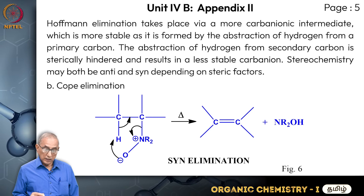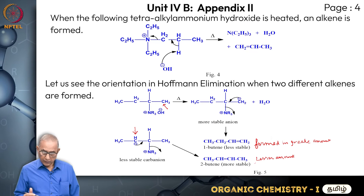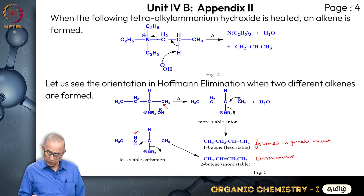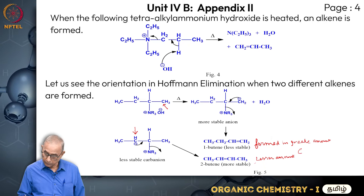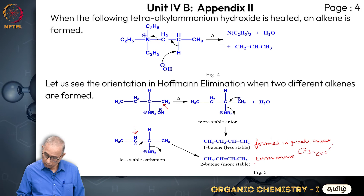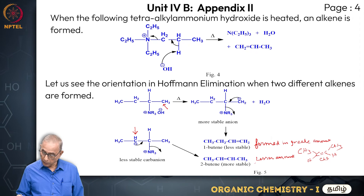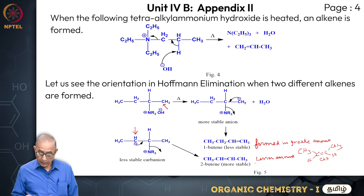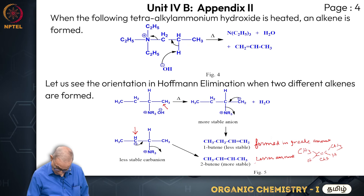Stereochemistry may be anti or syn depending upon the steric factors. If you have this compound, there is no stereochemistry with CH2, whereas here you have two possible products - cis with two methyl groups on the same side, and trans with two methyl groups opposite each other. That stereochemistry depends upon the structures, steric hindrance, and stability of the carbanions.